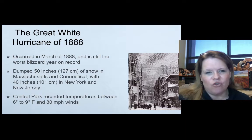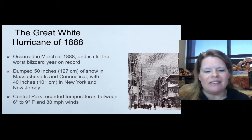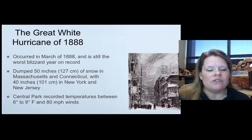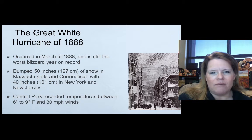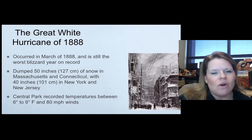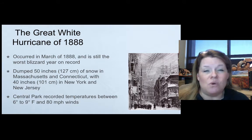The Great White Hurricane of 1888, occurring in March of that year, is still the worst blizzard on record. It dumped 50 inches of snow in Massachusetts and Connecticut, with 40 inches in New York and New Jersey. Central Park recorded temperatures between 6 and 9 degrees Fahrenheit with 80 mile per hour winds — essentially hurricane-force winds — combined with heavy snowfall. The snowmelt stormwater runoff would have also caused major problems.